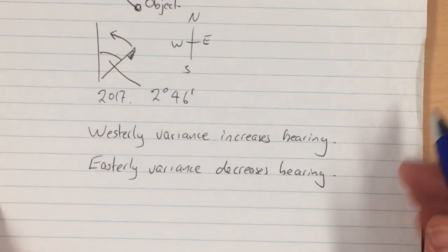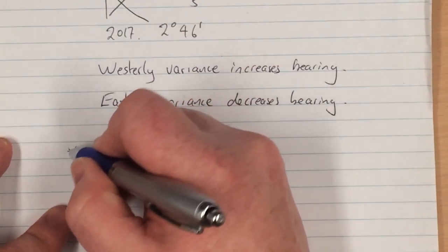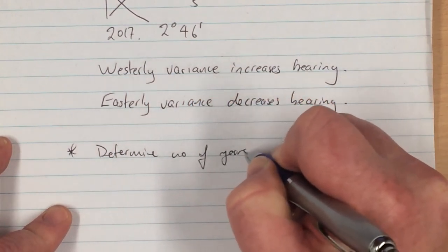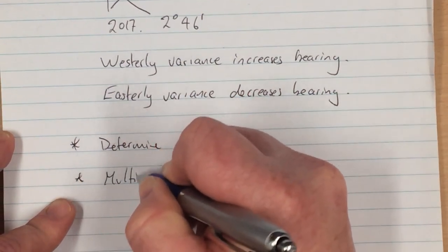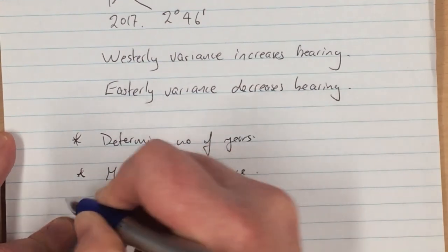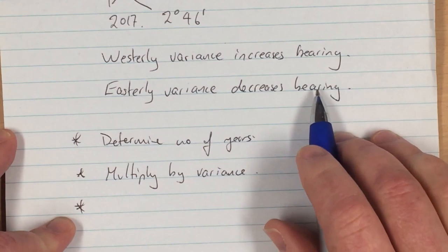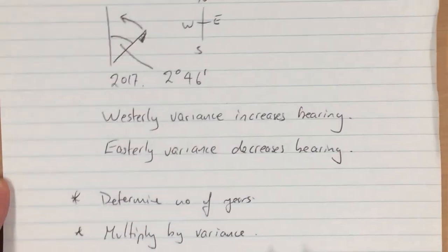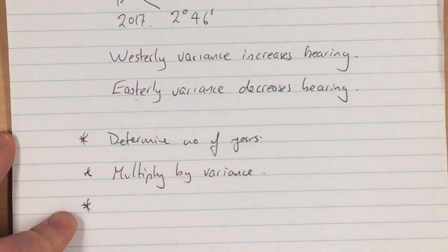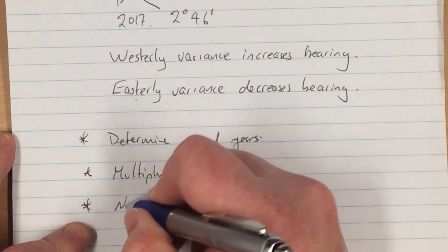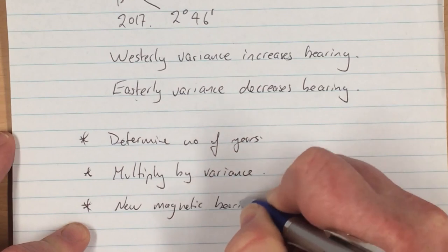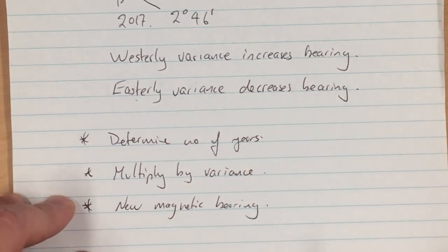So just to sum up the steps involved, first of all determine the number of years, multiply by the variance, and then either add that variance to the bearing if it's a westerly variance, or subtract it from the bearing if it's an easterly variance, to get your new magnetic bearing. And that's magnetic variance.